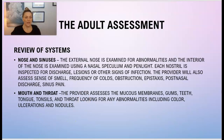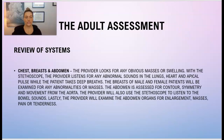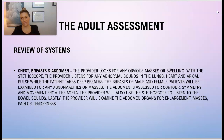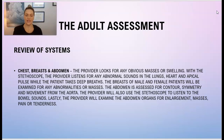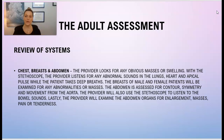Moving on to chest, breasts, and abdomen — the provider will look for any obvious masses or swelling. With the stethoscope, the provider will listen for any abnormal sounds in the lungs and the heart. They'll listen to the apical pulse — that apical pulse is done on the left side in the intercostal space while the patient takes deep breaths. The breasts of both male and female patients will be examined for any abnormalities or masses.